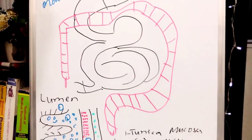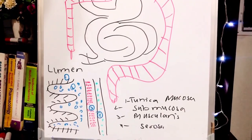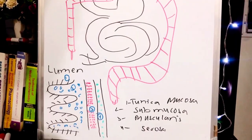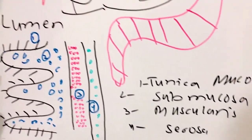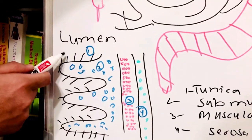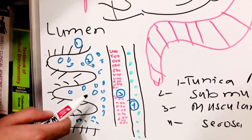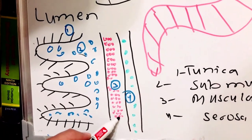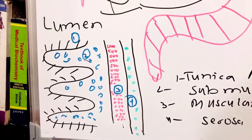If we talk about the layers of the small intestine, we have four layers: tunica mucosa, submucosa, muscularis, and serosa. As we can see here, this area is the mucosa, this area is the submucosa, this area is the muscularis, and this area is the serosa. Thanks for watching. In the next video we will discuss the anatomy of the liver.